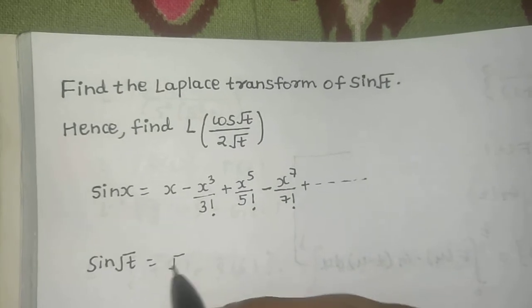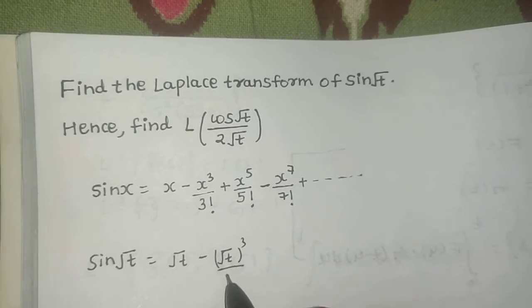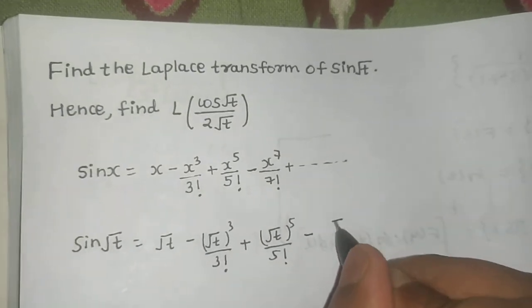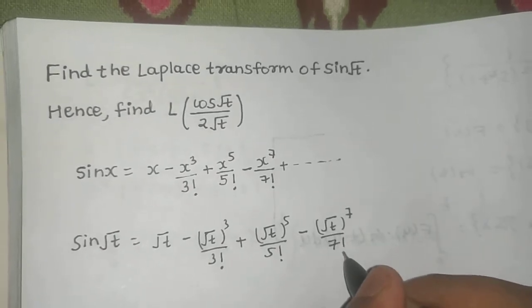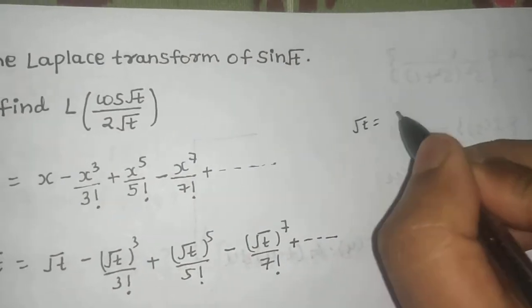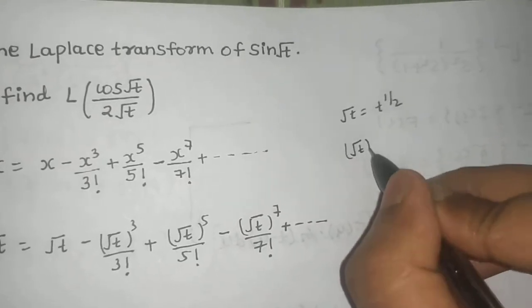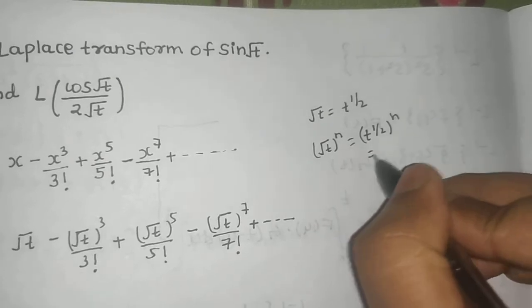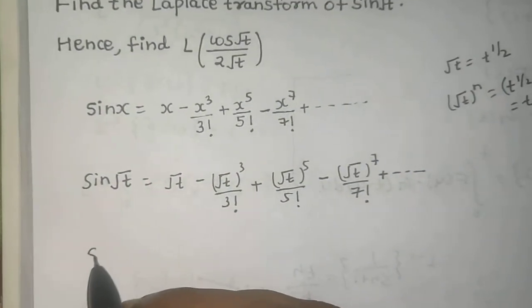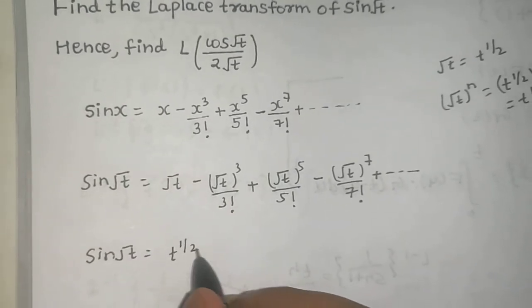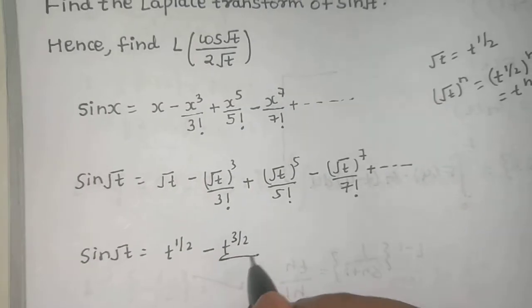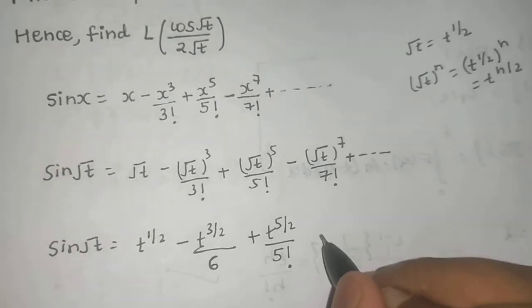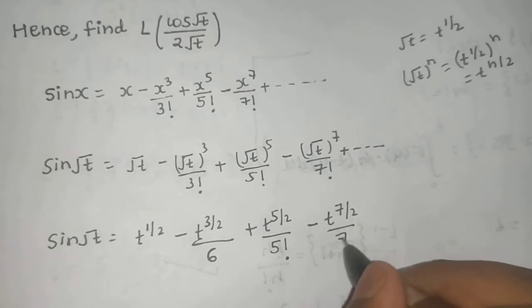Now we need to find sin(√t), so sin(√t) will be √t minus (√t)³/3! plus (√t)⁵/5! minus (√t)⁷/7! and so on. Since √t is t^(1/2), (√t)^n = t^(n/2). So we can write sin(√t) = t^(1/2) minus t^(3/2)/6 plus t^(5/2)/5! minus t^(7/2)/7! and so on.